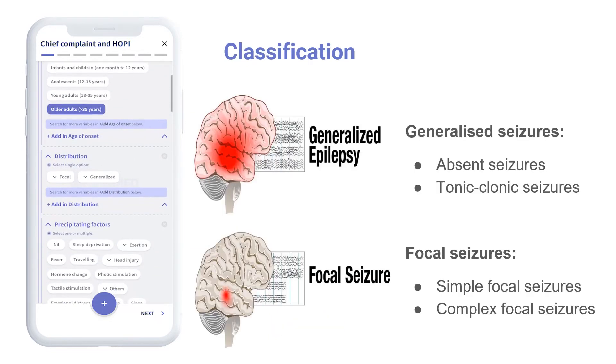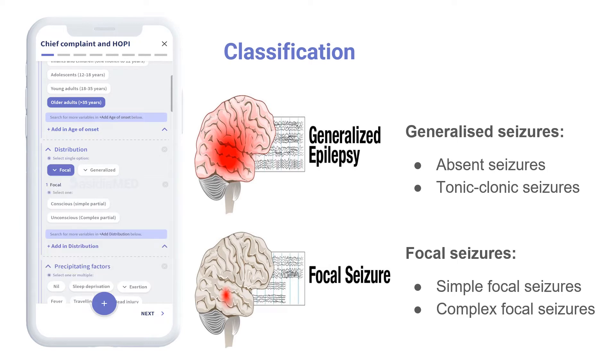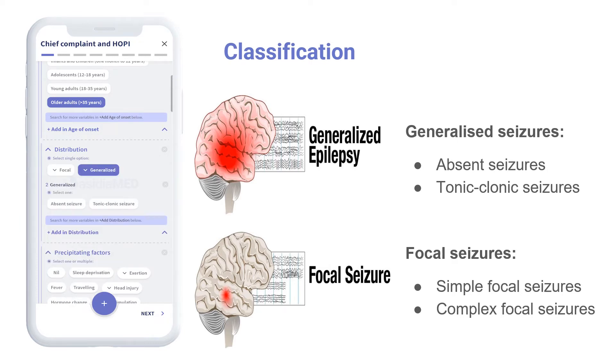Seizures are broadly classified as focal or generalized. While taking history, the following features are observed in each category.